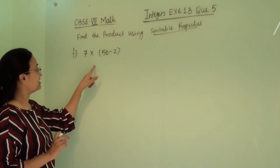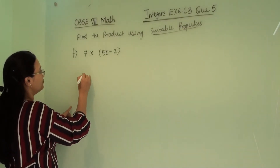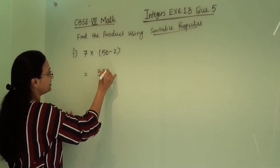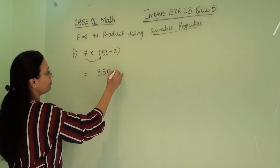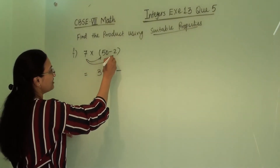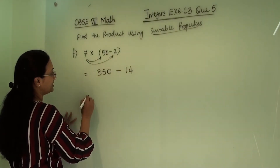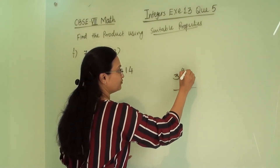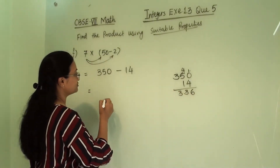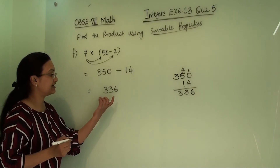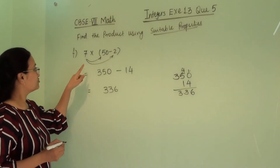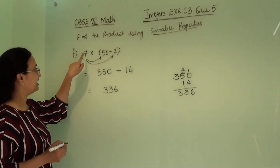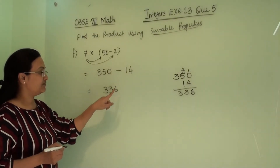Next numerical: 7 × (50 - 2). We multiply 7 with 50, getting 350, then minus, then 7 × 2 = 14. So 350 - 14 = 336. The answer is +336 because the integer is positive. We multiplied 7 with the full bracket — first with 50, then with 2, and then performed the subtraction.